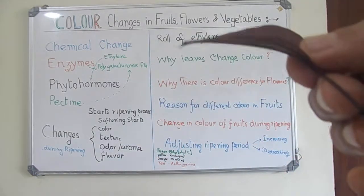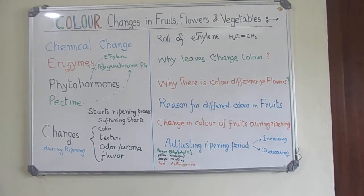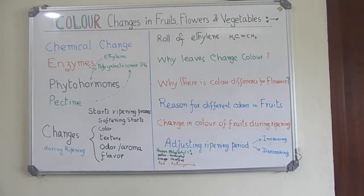The brown color develops when maximum anthocyanin is present, and eventually the leaf falls down. Thank you viewers for listening to this video. If you find the video useful, please subscribe. Thank you, bye.